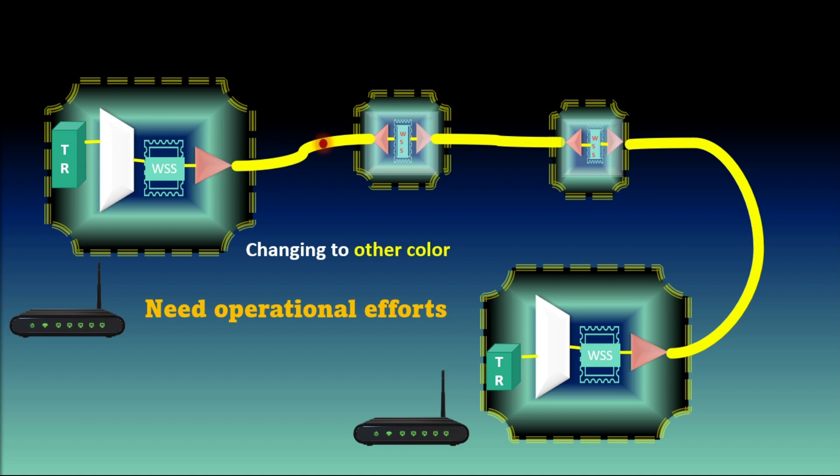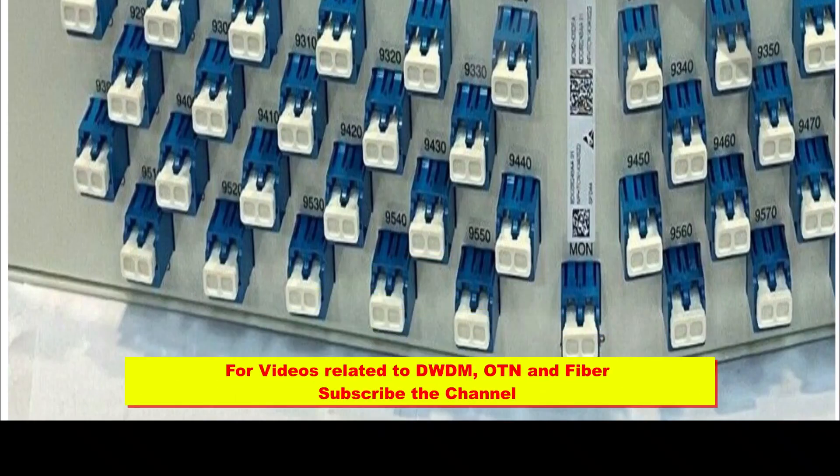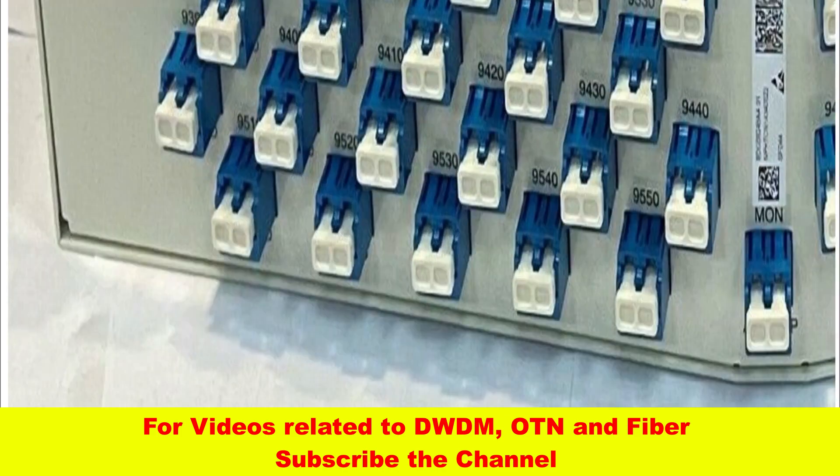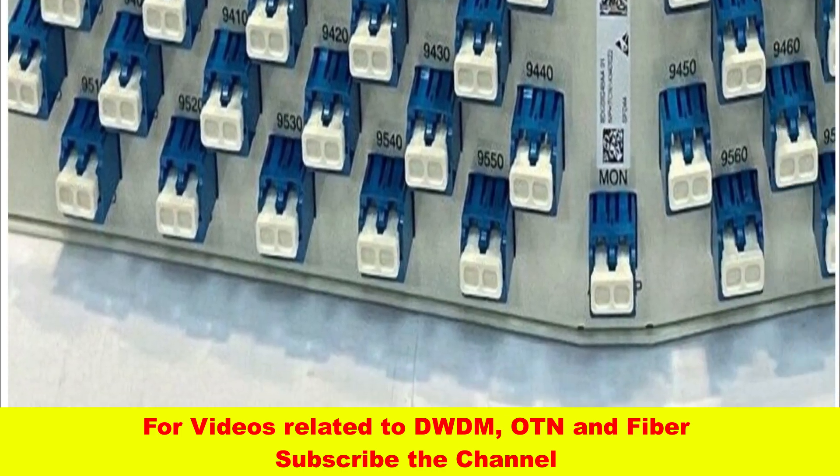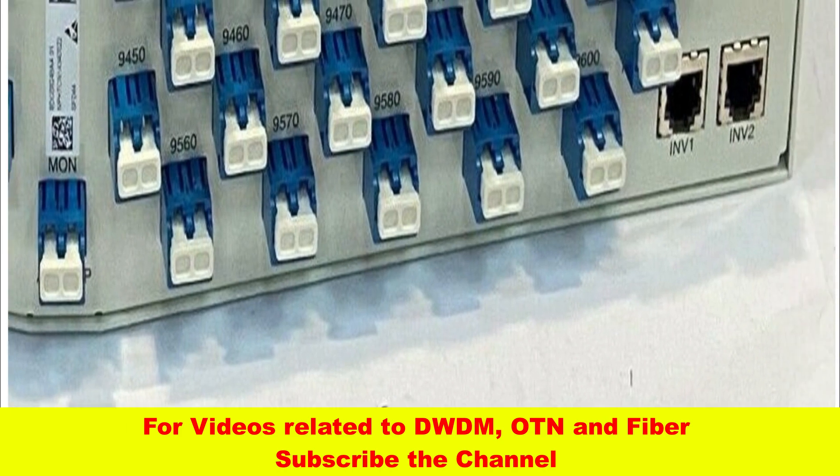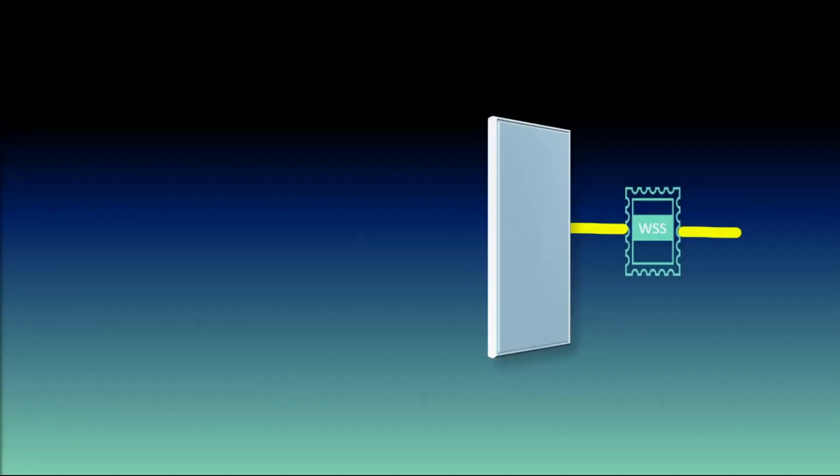You might see these kind of port labels on some multiplexers. These ports define the wavelength or frequency it's supported. These are dedicated ports where the transponder is connected. For easy understanding, we'll take an example where this multiplexer has same colored ports like red, green, yellow and so on.